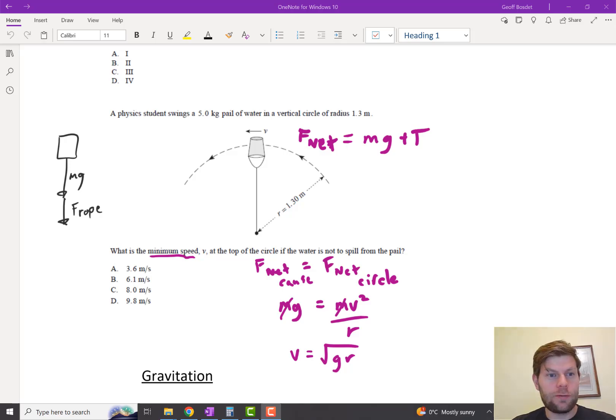Welcome. I just want to do a quick video talking about solving minimum speed for objects moving in a vertical circle. This is kind of a special case - same old F-net-cause equals F-net-circle uniform circular motion tricks, but there is a bit of a trick with this whole minimum speed idea. So just going over that now.